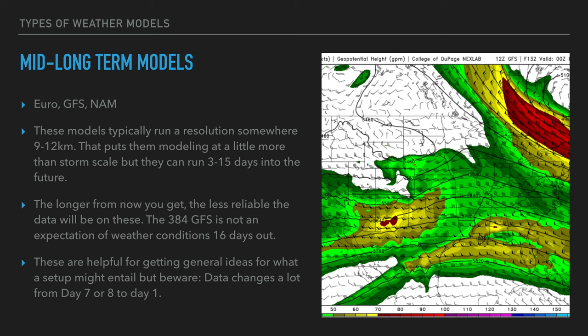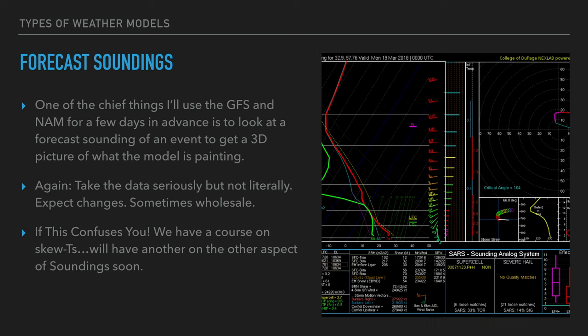Forecast soundings are another tool available on models like the GFS and NAM. They give a good 3D picture of what the model is painting. Honestly, if I'm being lazy, I'll pull up supercell composite or CAPE, click where I'd want to target, and then look at a sounding — even at day seven or eight. There's no reason to put a lot of effort into a day that far out as a storm chaser.